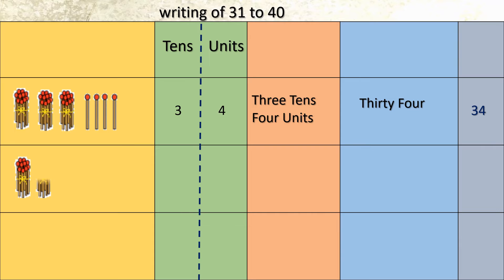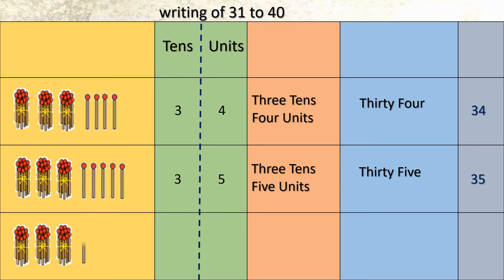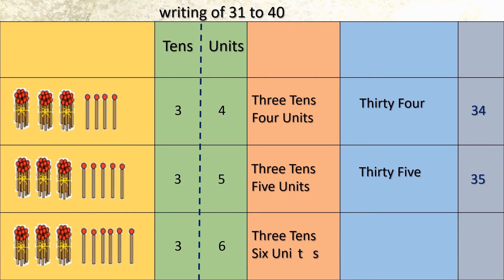Next, we will add one more stick to 34. Now this is 3 tens and 5 units — number formed is 35, and 30 and 5. Again, one more stick added: 3 tens and 6 units; number is 36, and in numerals 30 and 6, that makes 36.